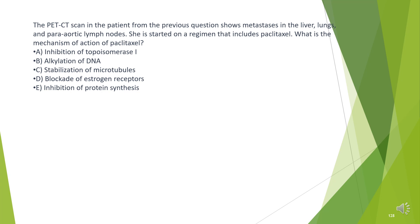The PET-CT scan in the patient from the previous question shows metastases in the liver, lungs, and para-aortic lymph nodes. She is started on a regimen that includes paclitaxel. What is the mechanism of action of paclitaxel?